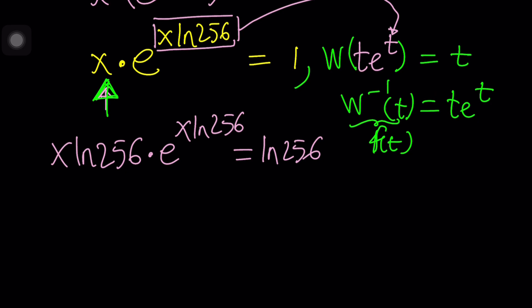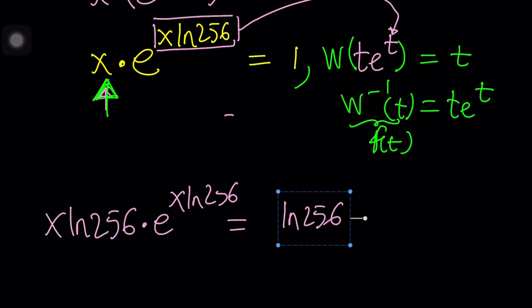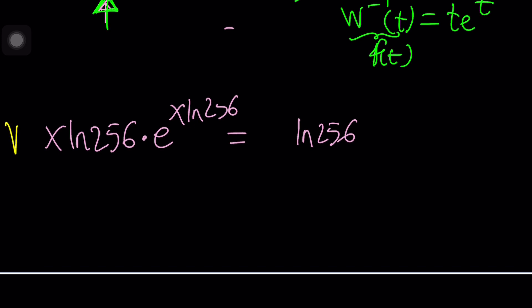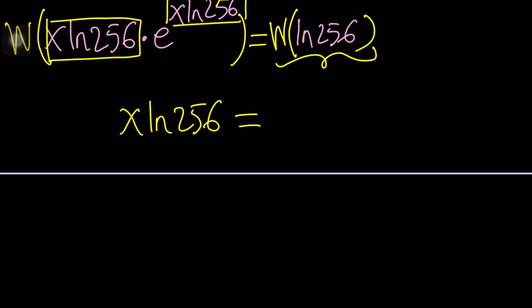Now we're going to apply Lambert's w function, but we don't have room for that. So what do we do? We just move this and then also move this separately. Make some room. And now we can go ahead and just w both sides. And now when you apply w on the left-hand side, because this is t times e to the t, the output would be just t, which means x times ln 256. And that is equal to something else. So now let's go ahead and take a look at this until we simplify it, and then once we simplify, we can come back here, plug it in, and then go from there.